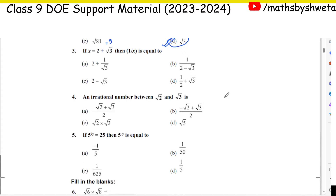Next question: if x is equal to 2 plus √3, then find 1 upon x. You can substitute the x value. So 1 upon x becomes 1 upon (2 + √3). To simplify, we need to rationalize the denominator.